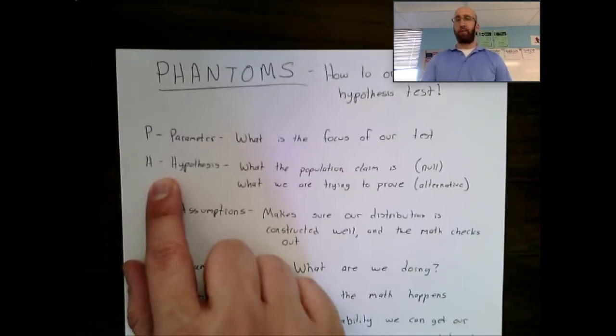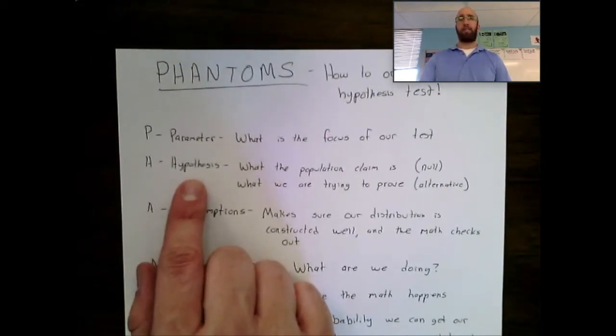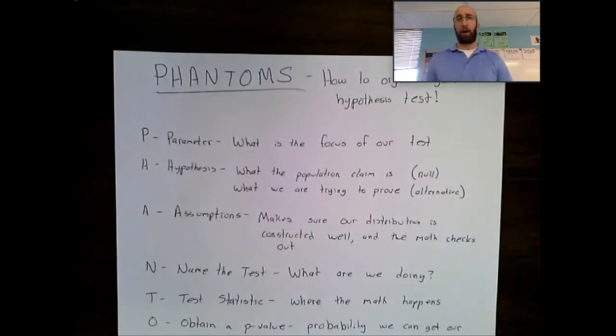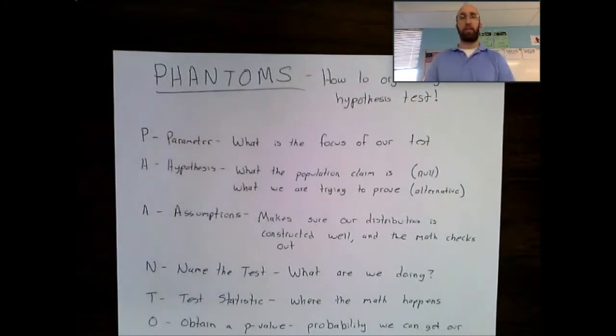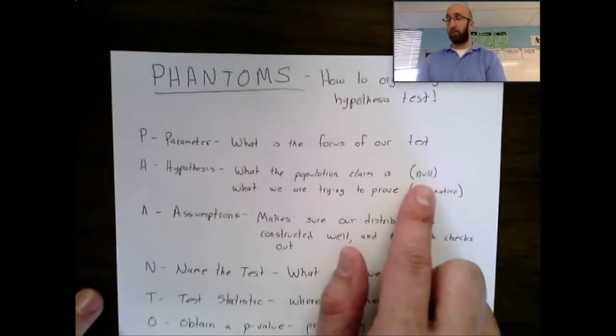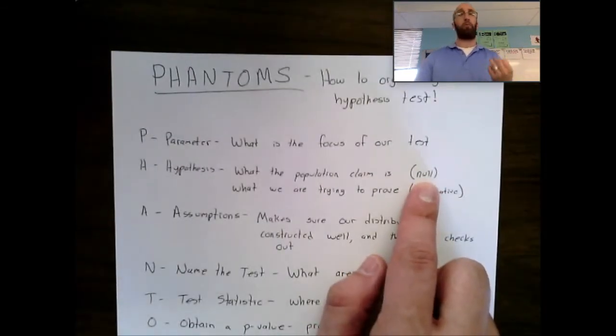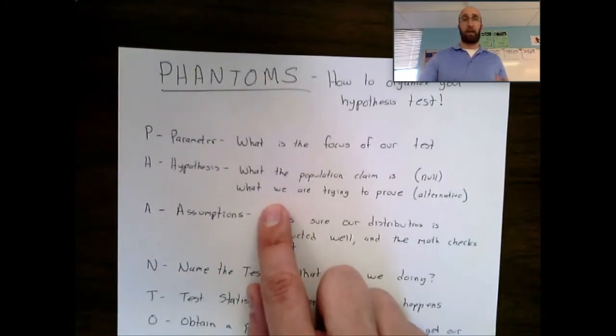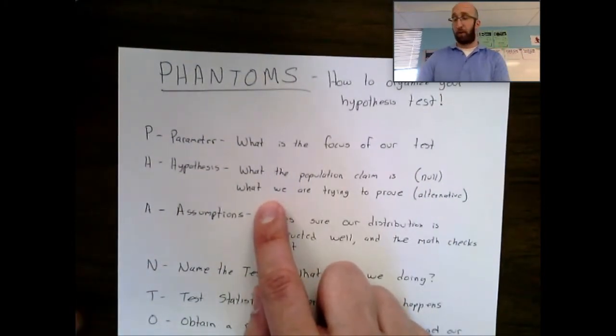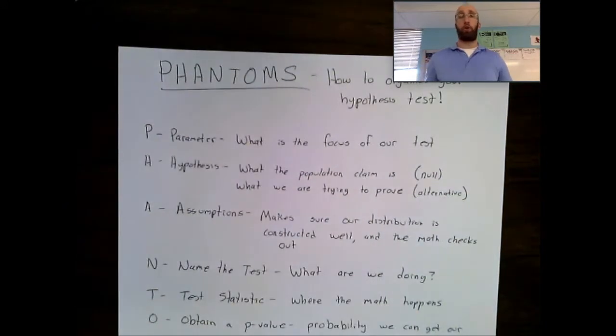Next, we're going to move on to H, which is a very important step. It's our hypothesis. There's going to be two types of hypothesis. The first is what the population claim is. So what is someone claiming about the population? Write that down. That is going to be your null hypothesis. This is what we are assuming is true. You're also going to write down a second hypothesis, which is the alternative hypothesis. This is what we are trying to prove.